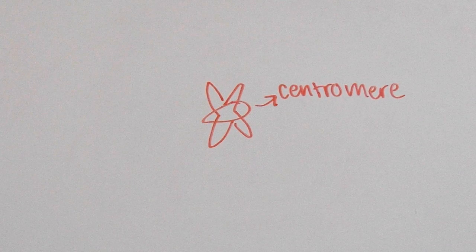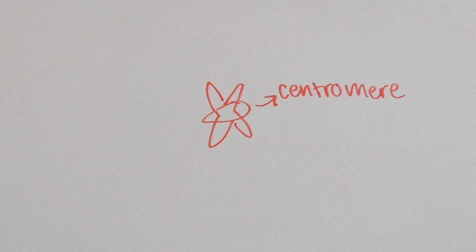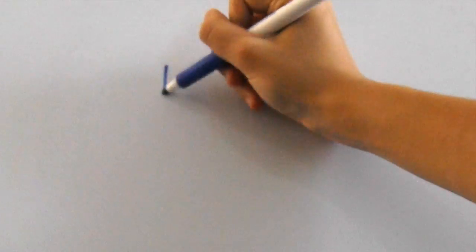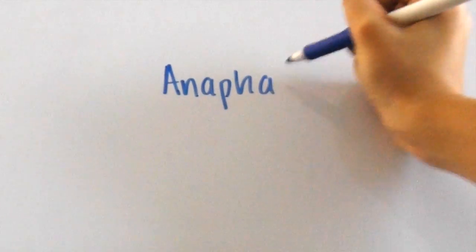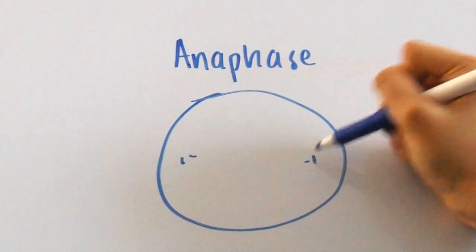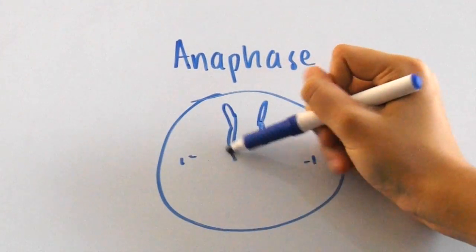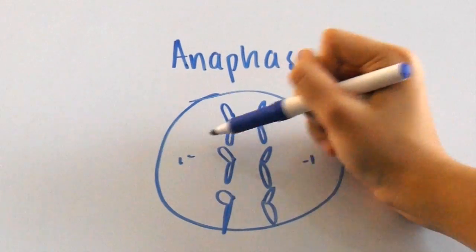In other words, the microtubules attach to the chromosomes by the kinetochores at the centromeres. Now that the microtubules have latched onto each one of the chromosomes, they start to pull each chromatid, which is like each half of the chromosome, apart.